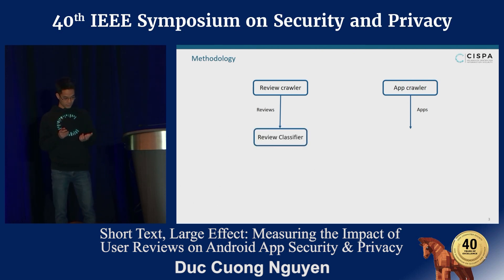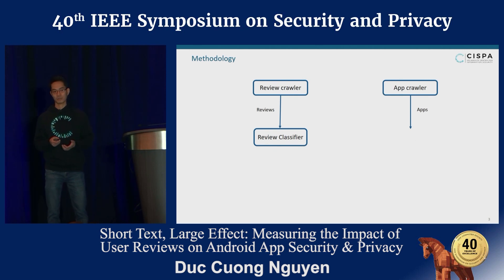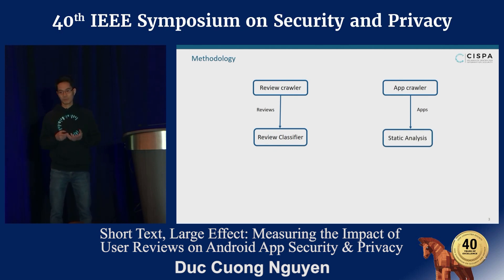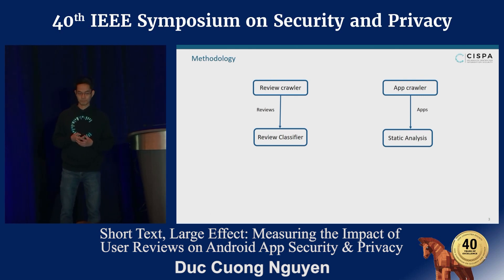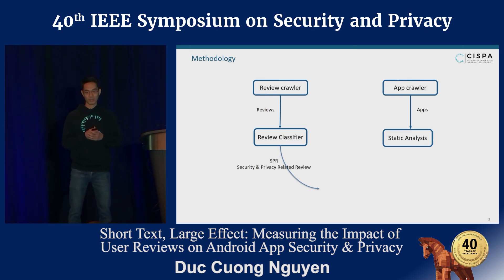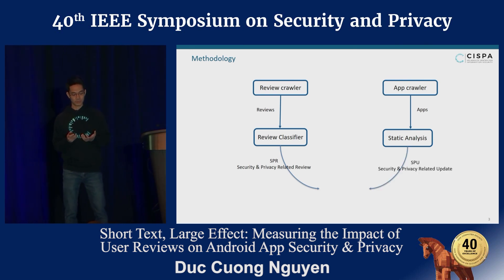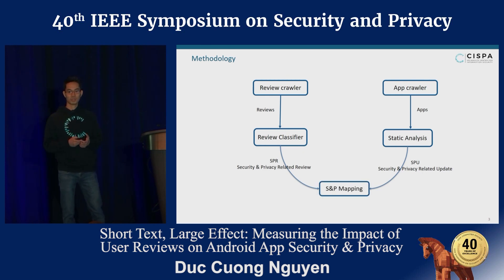For app reviews, we want to know whether a given review is security and privacy-related or not. Therefore, we build a review classifier using machine learning and natural language processing techniques. On the other hand, we want to know whether a given update is security and privacy-related or not. Therefore, we perform static analysis on the app version history. Once we have the set of SPR (security and privacy-related reviews) and SPU (security and privacy-related app updates), we map them together using our SP mapping component.